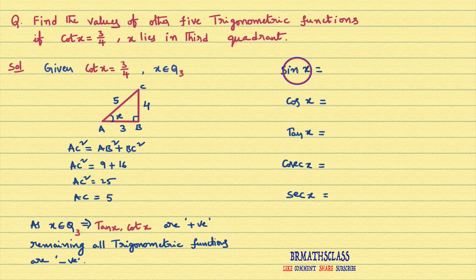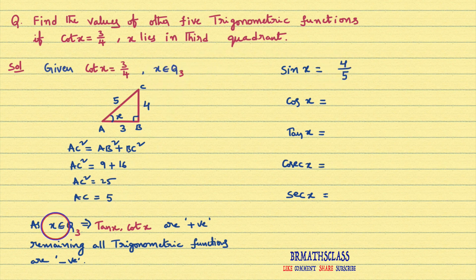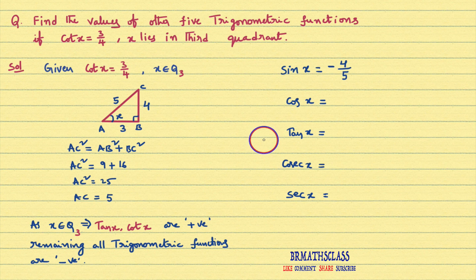Sin x is defined as opposite side by hypotenuse. Opposite side is 4 divided by hypotenuse 5. Since X lies in third quadrant, sin x is negative. Therefore, sin x equals minus 4 by 5.